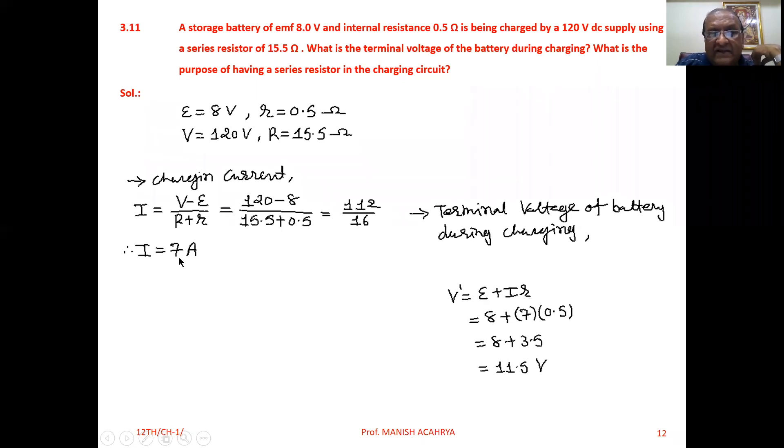E = 8V, I = 7A which we calculated, and r = 0.5Ω. Solve it: V' = 8 + (7)(0.5) = 11.5V. You will get the terminal voltage of the battery as 11.5V.